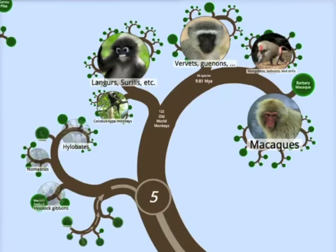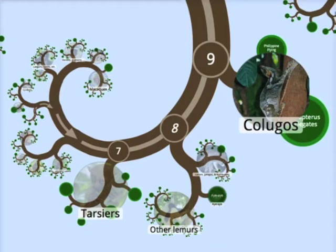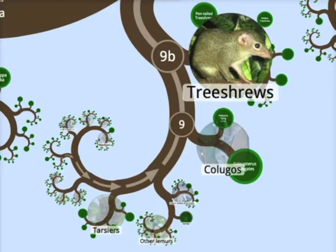Then the old world monkeys join us, and then the new world monkeys. We are on the seventh rendezvous point. Tarsiers have just joined us, and then lemurs join us — so now all the primates are represented. The ninth rendezvous point is where the colugos join us — these are the flying lemurs. There's actually a change between the old Ancestor's Tale and the new Ancestor's Tale — the updated book will be out later this year and will feature this kind of tree of life visualisation, showing extra rendezvous points.